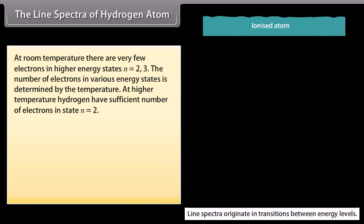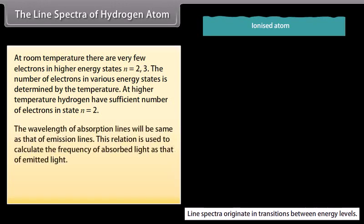The number of electrons in various energy states is determined by the temperature. At higher temperature, hydrogen has sufficient number of electrons in state n = 2. The wavelength of absorption lines will be same as that of emission lines. This relation is used to calculate the frequency of absorbed light as that of emitted light. E₂ - E₁ = hν₁₂, which is equal to hc/λ₁₂.